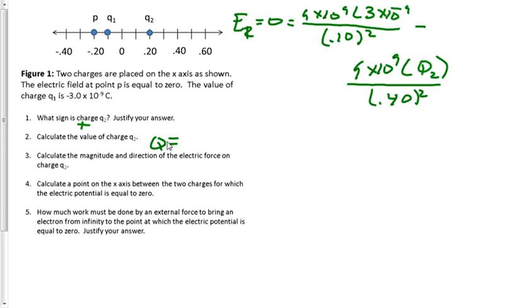Q is equal to 4.8 times 10 to the minus 8 coulombs. And let's make sure we know where the 0.4 comes from. We've got 0.2 to 0, and then another 0.2 to get to where P's location is. So now we have the value for the charge right there.